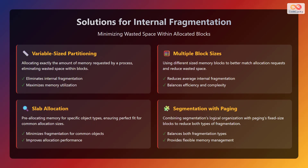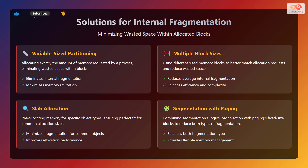There are several solutions for internal fragmentation. One is variable size partitioning, allocating exactly the amount of memory requested by a process, eliminating wasted space within blocks. This eliminates internal fragmentation and maximizes memory utilization. The other solution is multiple block sizes, using different sized memory blocks to better match allocation requests and reduce wasted space. This reduces average internal fragmentation and balances efficiency and complexity. The other solution is slab allocation, pre-allocating memory for specific object types, ensuring perfect fit for common allocation sizes. This minimizes fragmentation for common objects and improves allocation performance. The other solution is segmentation with paging, combining segmentation's logical organization with paging's fixed size blocks to reduce both types of fragmentation. This balances both fragmentation types and provides flexible memory management.